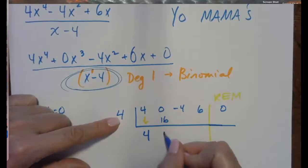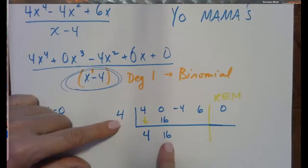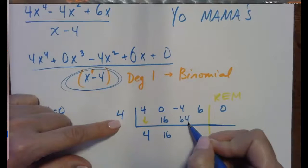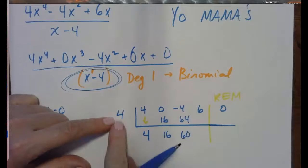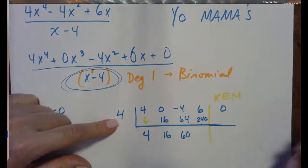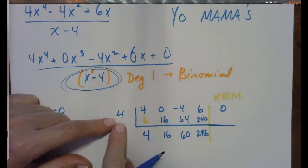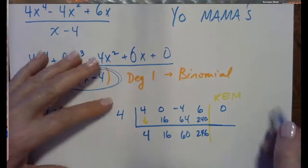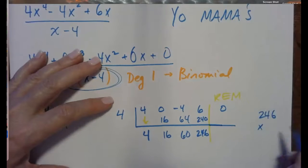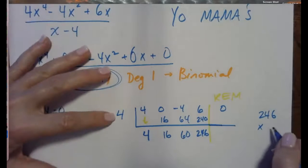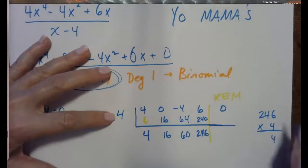4 times 16 is 64. Negative 4 plus 64 is 60. 4 times 60 is 240. 6 plus 240 is 246. And 4 times 246. I better check my multiplication. So 246 needs to be multiplied by 4. Let's do that over here.